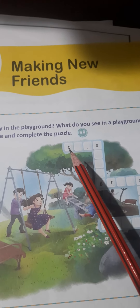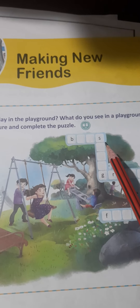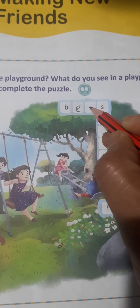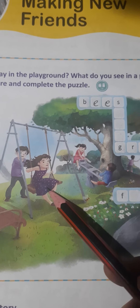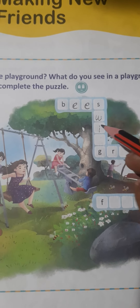Now the first one here — B dash dash. So what can you see here? Can you see the bees? Yes. So it is B-E-E-S. And then the girl is on the swing. So it is here: swing — S-W-I-N-G, swing.